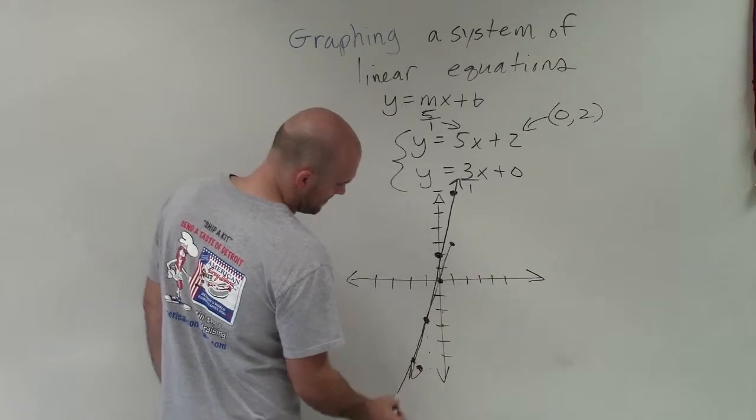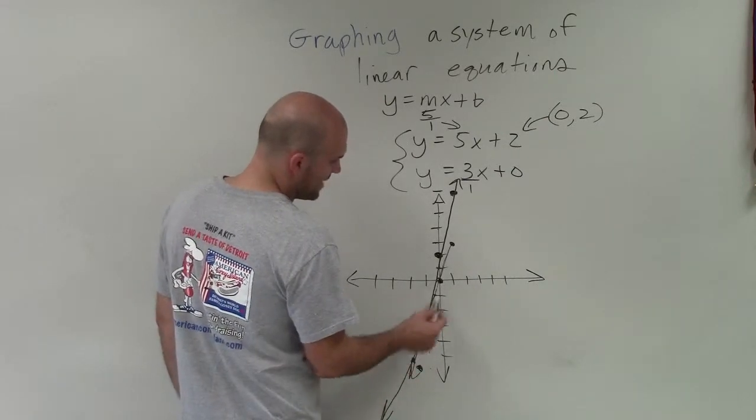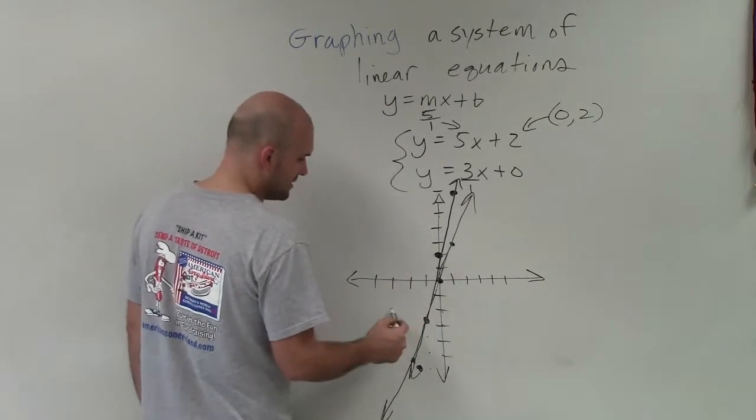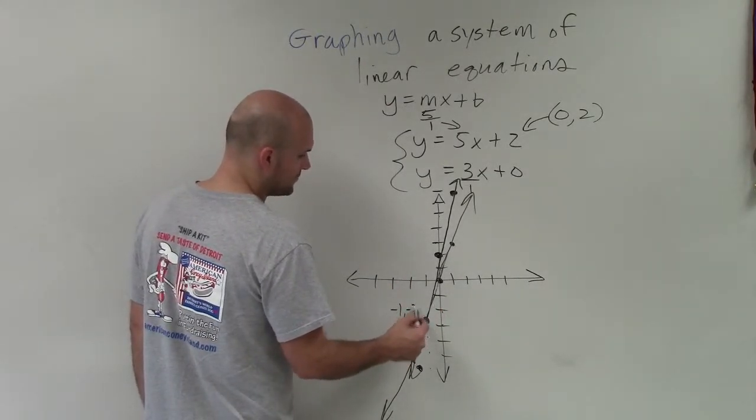You can see that these two graphs, as they're very close in their slope, intersect at our coordinate point negative 1, negative 3.